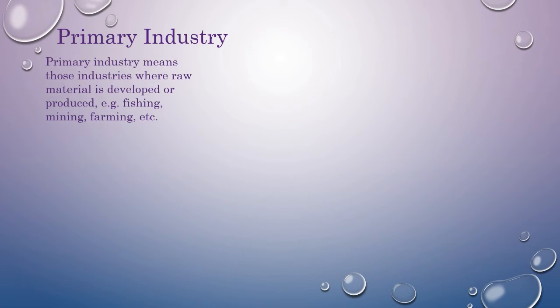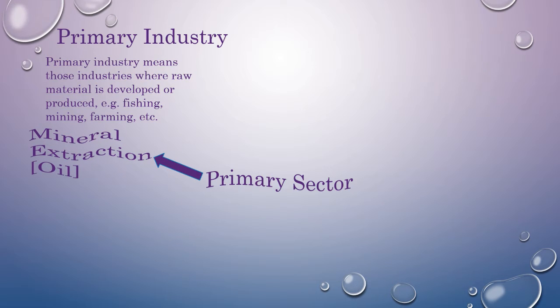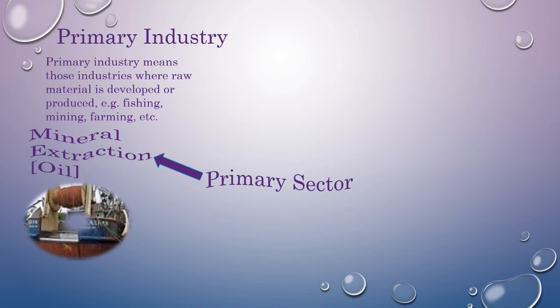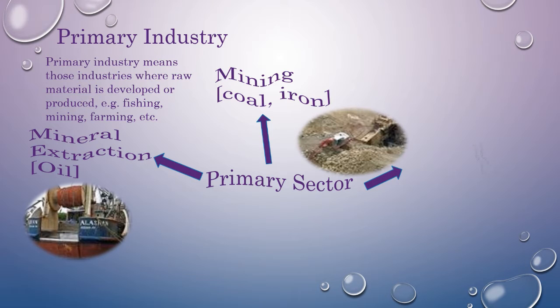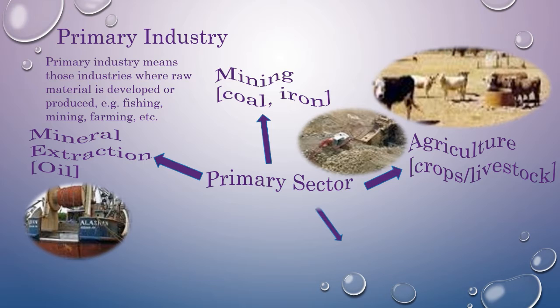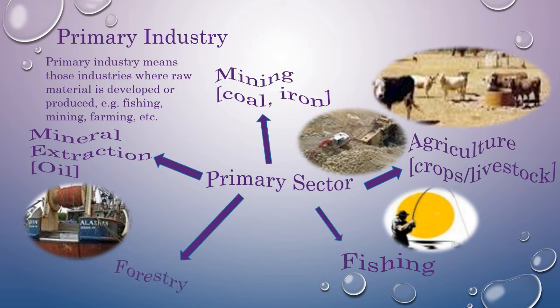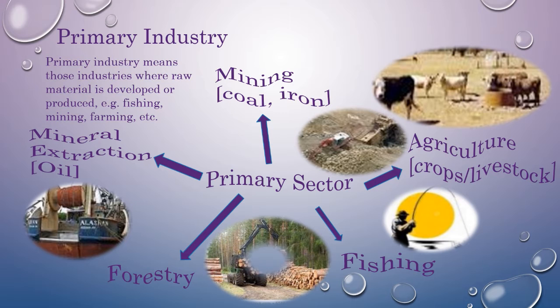Primary industry means those industries where raw material is developed or produced, for example: fishing, mining, farming, etc. In the primary sector you have mineral extraction, oil mining, coal, iron, agriculture crops, livestock, fishing, and forestry.